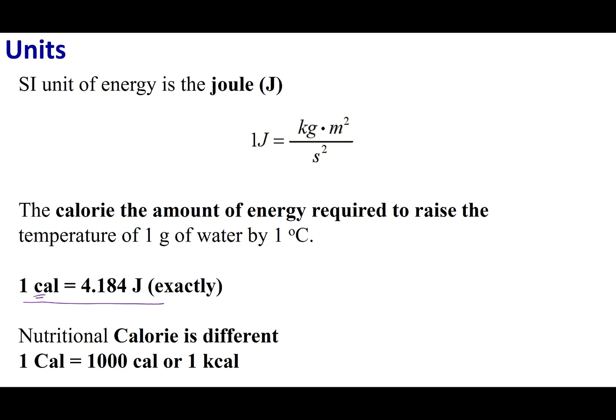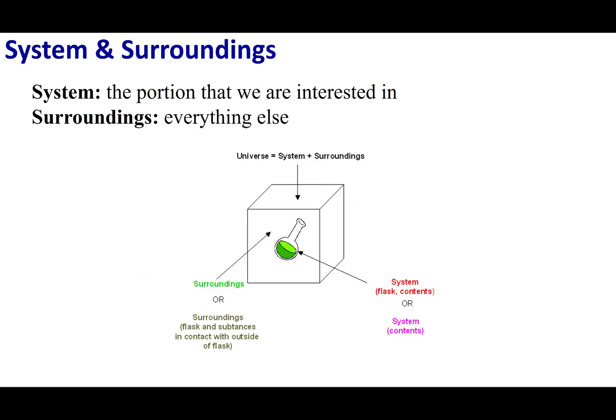You'll know that this calorie is spelled with a small c. This isn't the calorie that is being mentioned on your food wrappers. That's called a nutritional calorie, and a nutritional calorie is spelled with a big C. A nutritional calorie is going to be 1,000 of the normal calories. We will be working almost exclusively in joules in this class.